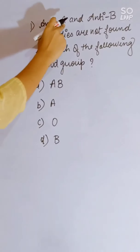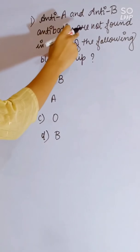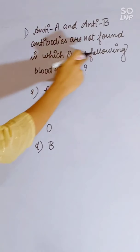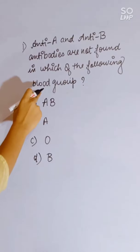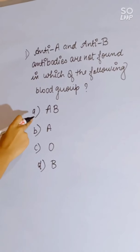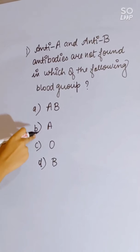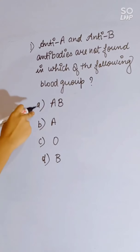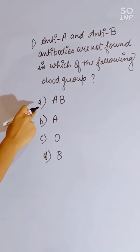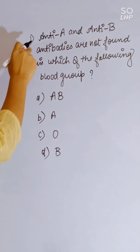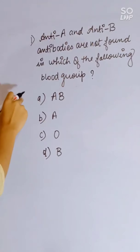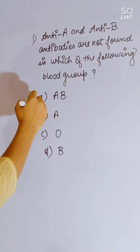Anti-A and anti-B antibodies are not found in which of the following blood groups? Options: A, B, AB, and O. Blood group AB will have absent anti-A and anti-B antibodies. Correct answer is AB.